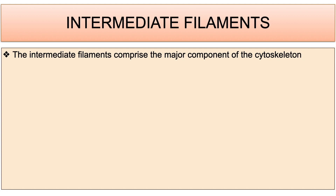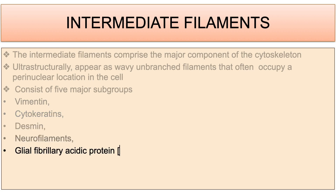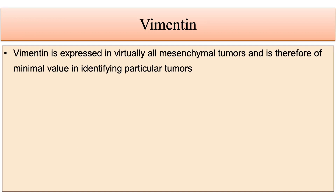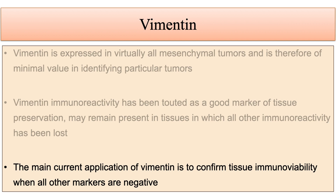The intermediate filaments comprise the major component of the cytoskeleton and consist of five major subgroups: vimentin, cytokeratin, desmin, neurofilaments, glial fibrillary acidic protein (GFAP), and minor subgroups like nestin and peripherin. Vimentin is expressed in virtually all mesenchymal tumors and is therefore of minimal value in identifying a particular tumor. Its main current application is to confirm tissue immunoviability when all other markers are negative.